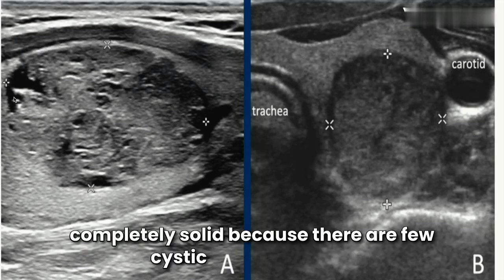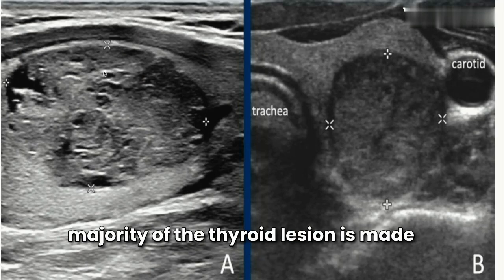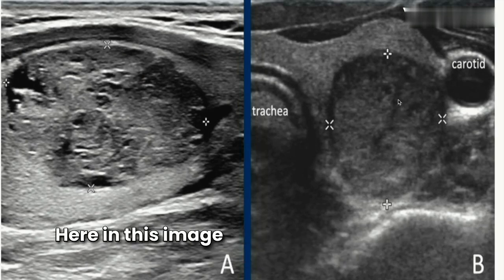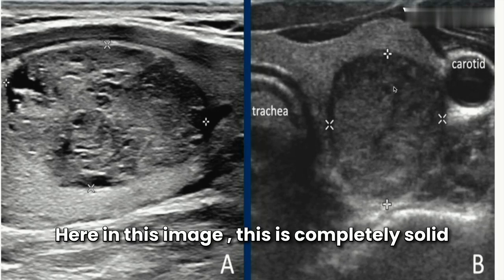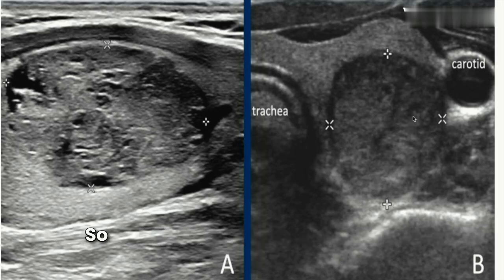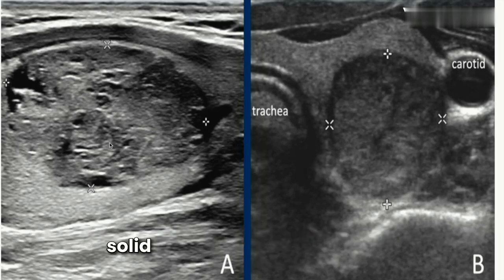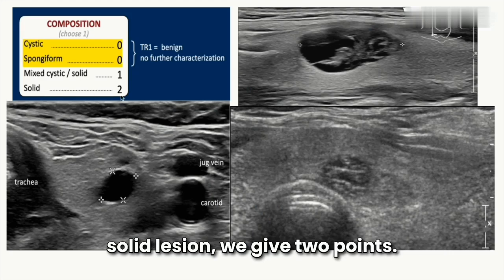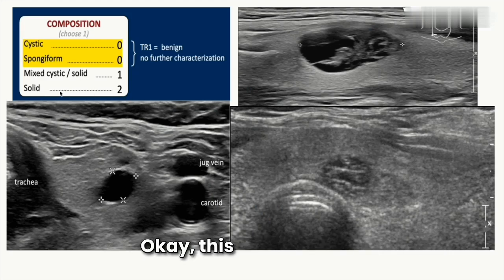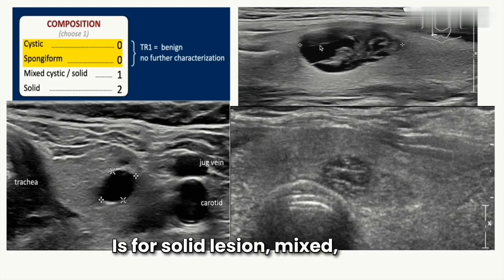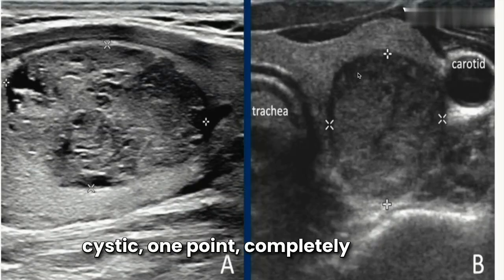In this image we can see an almost completely solid lesion — there are a few cystic spaces, but the majority is solid. In this other example, the lesion is completely solid. A completely solid or almost completely solid lesion scores two points. To summarize: solid lesion = two points, mixed solid and cystic = one point.